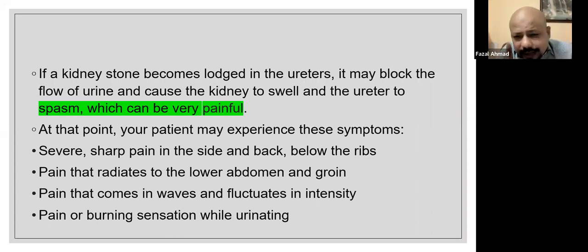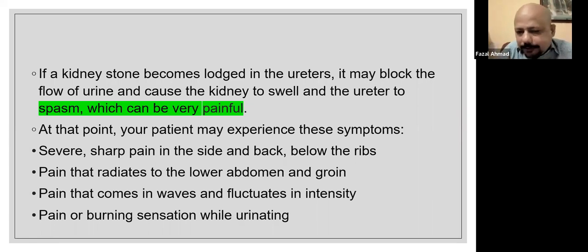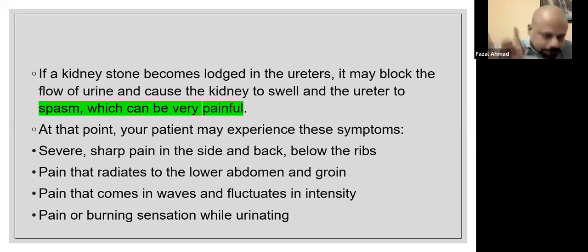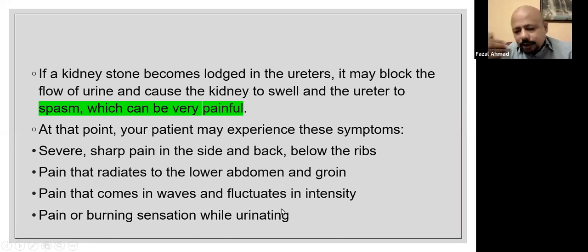If during scanning we suspect a stone, a plain abdominal x-ray is needed. Intravenous pyelography is also important — it shows not only the obstruction but also the function of the kidney. Symptoms include sharp pain in the side and back below the ribs, pain radiating to the lower abdomen and groin, pain that comes in waves and fluctuates in intensity, and pain or burning sensation while urinating.